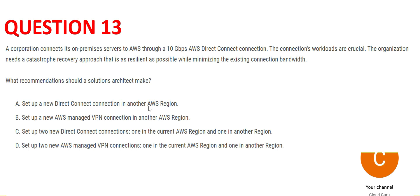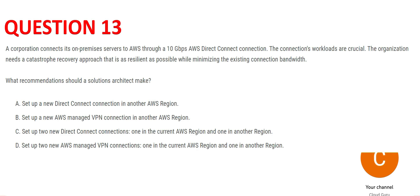Option A says add another Direct Connect in another AWS region — if the current region fails, traffic goes to the other region. Option B suggests setting up an AWS VPN connection in another region. But if we are already going to another region, we could just use Direct Connect there. VPN is not the recommended solution when minimizing load on existing bandwidth, so B is wrong and A, while not terrible, has better alternatives.